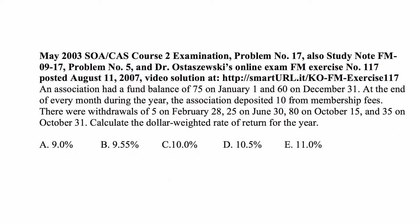Here's the problem. An association had a fund balance of 75 on January 1st and 60 on December 31. At the end of every month during the year, the association deposited 10 from membership fees. There were withdrawals of 5 on February 28th, 25 on June 30th, 80 on October 15th, and 35 on October 31.